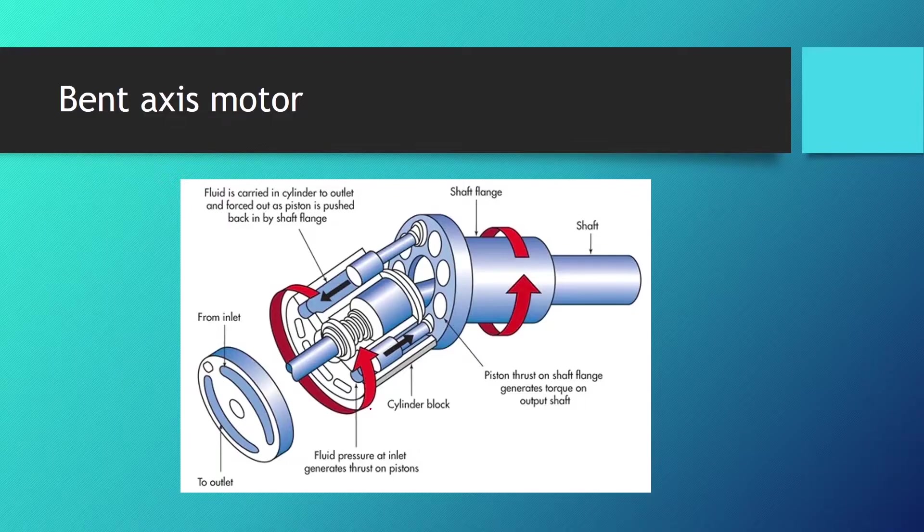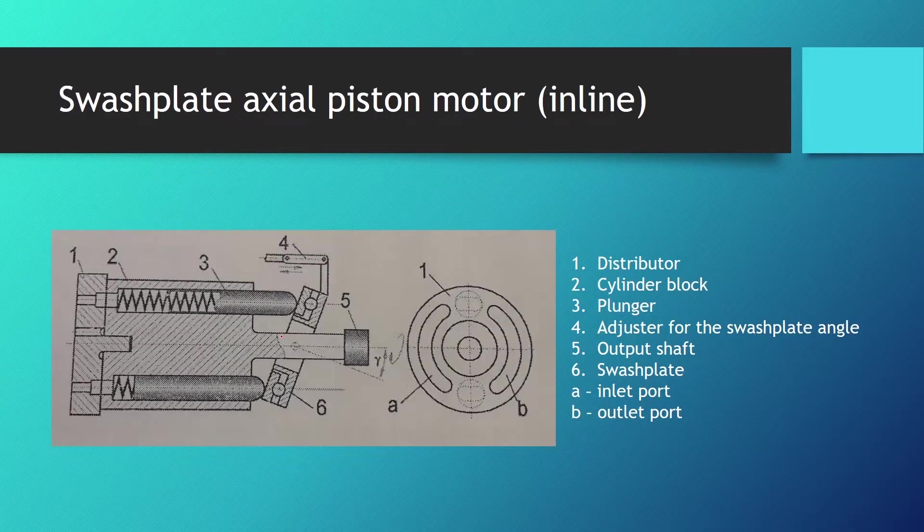Here we can see another picture of a bent axis motor. Fluid pressure at inlet generates thrust on pistons. We have the pressurized fluid entering our motor pushing the pistons which then thrust on shaft flange and generate rotation of the output shaft. Then we have the pistons going back, pushing the fluid to the outlet port.